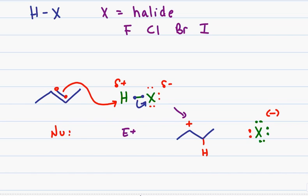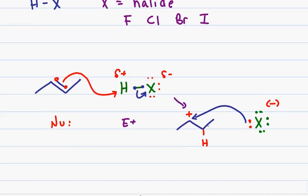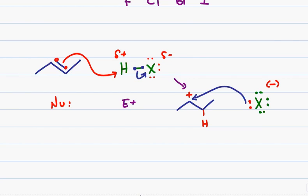The halogen, with its negative extra pair of electrons, comes back and attacks the carbocation to give me my final product which is a halogenated alkane or an alkyl halide.